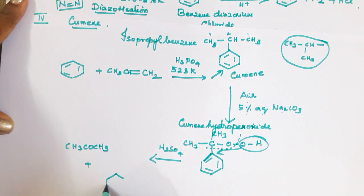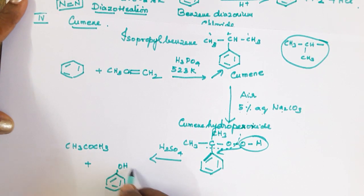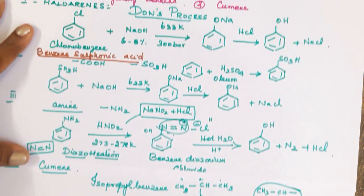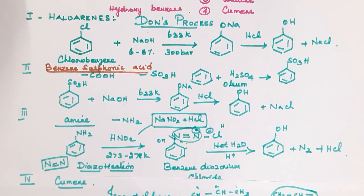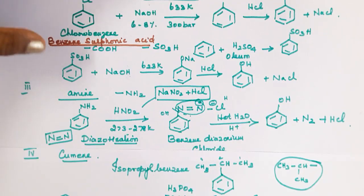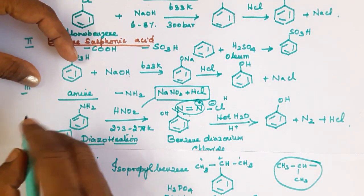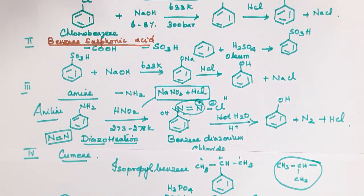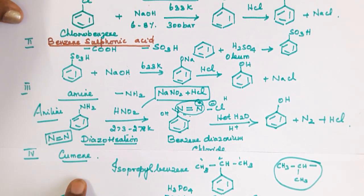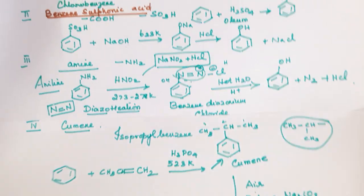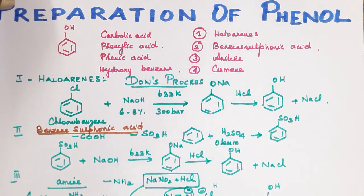When cumene hydroperoxide is treated with a dilute acid solution, it cleaves to give two products: phenol (OH attached to benzene ring) and acetone (CH₃COCH₃, also called propanone). This is the last method. In summary, the four methods of preparation of phenol are: (1) from halo arenes via Dow's process, (2) from benzene sulfonic acid, (3) from aniline via diazotization with nitrous acid followed by hot water hydrolysis, and (4) from cumene.